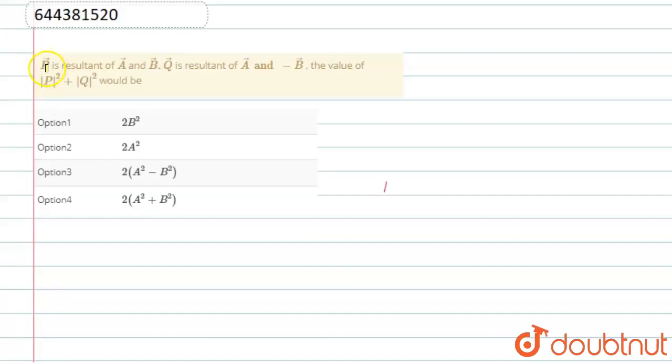First the question is: P is resultant of A and B, and Q is resultant of A and minus B. The value of magnitude of P square plus magnitude of Q square would be.